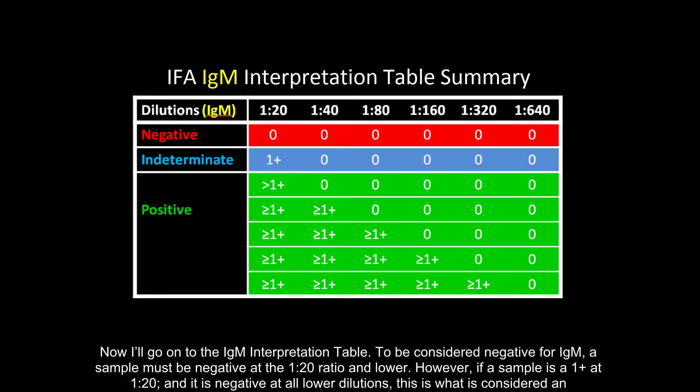Now we'll go on to the IgM interpretation table. To be considered negative for IgM, a sample must be negative at the 1 to 20 ratio and lower.